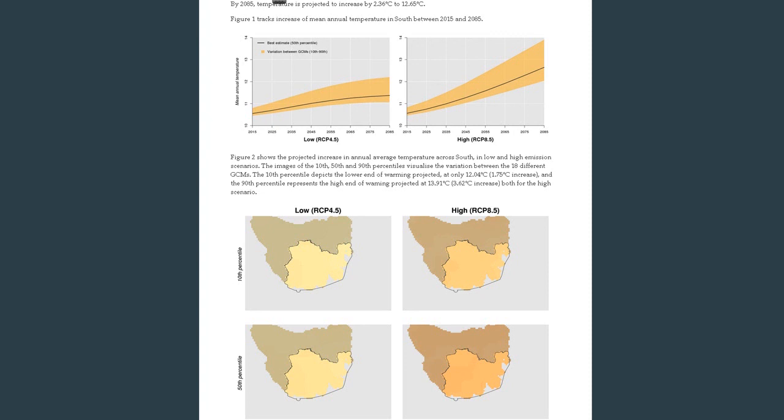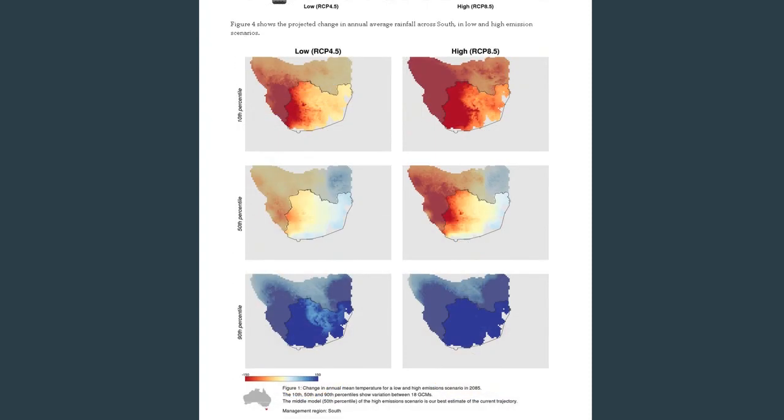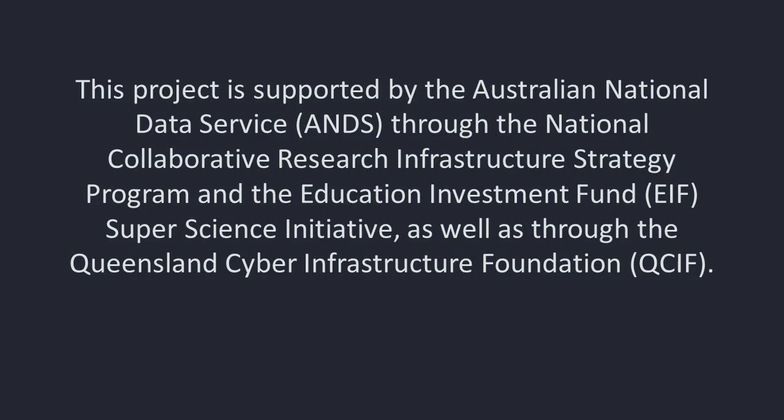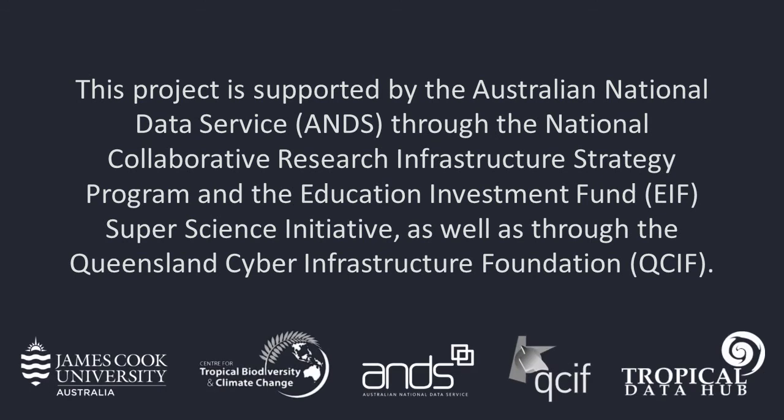Species included in the CLIMAS tool suite include land-based Australian birds, mammals, reptiles and amphibians. The CLIMAS tool allows anyone to have a summary of what the climate is likely to do over the next hundred years in the region that they're interested in, that they live in.